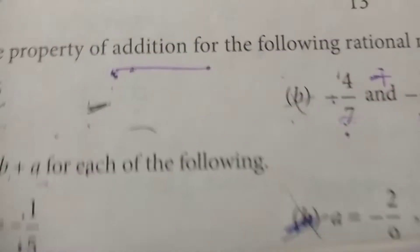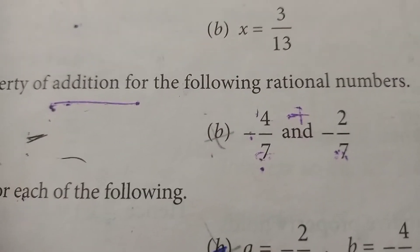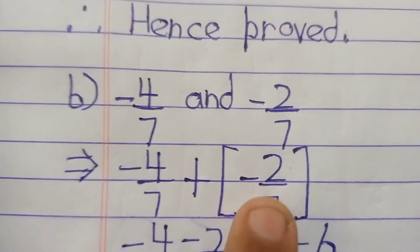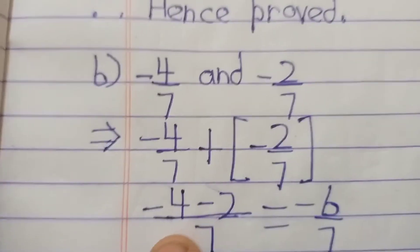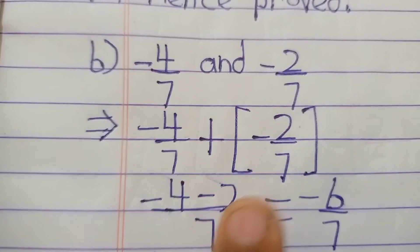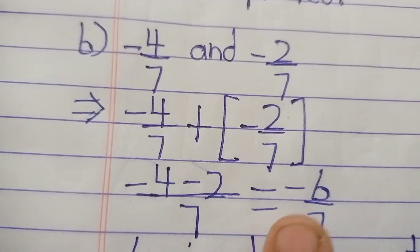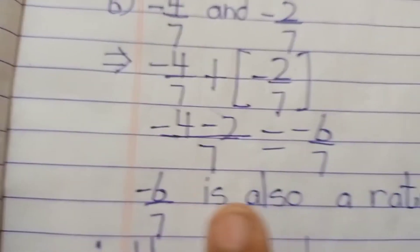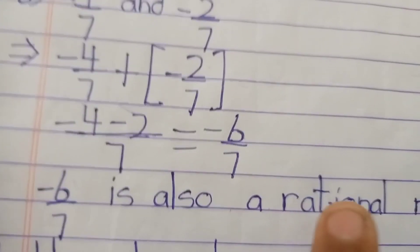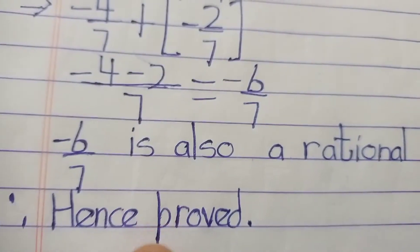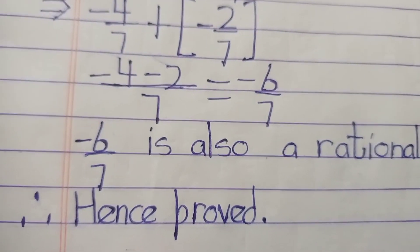For part (b): -4/7 and -2/7. Adding them: (-4 + (-2))/7 = -6/7. And -6/7 is also a rational number. Hence proved.